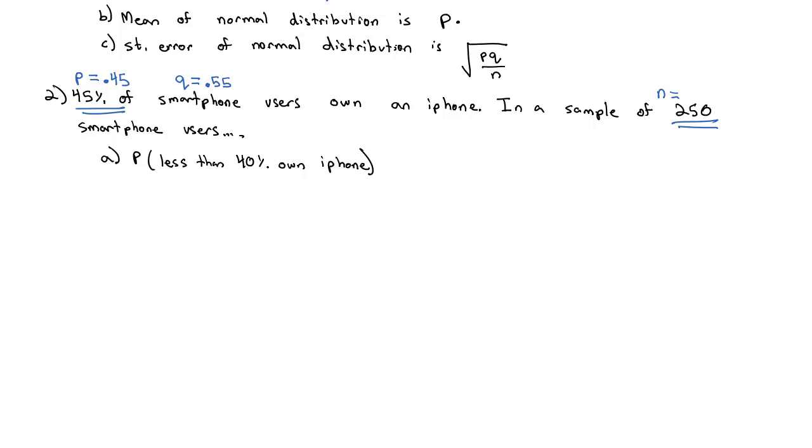So when we use this as a normal distribution, in place of μ, the average, we're going to use P, the proportion, which is 0.45. And in place of σ, which is normally the standard deviation, we're going to use the standard error, which is the square root of P, 0.45, times Q, 0.55, divided by N, the sample size of 250.